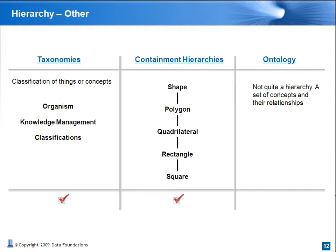Taxonomies or classifications are inherently hierarchical structures used in various areas. Originally used to classify organisms, now they're used everywhere, such as in knowledge management and document classification. While researching a formal definition for taxonomies, we came across containment hierarchies, which is a specific kind of taxonomy where the child is actually a specific instance of the parent. There are quite a few new terms used in this area — enough for another webinar, in fact.